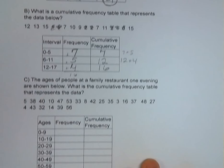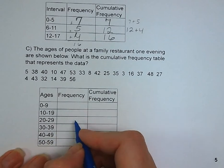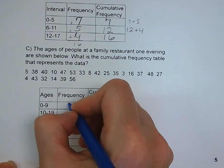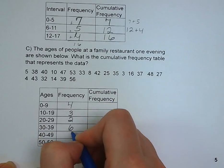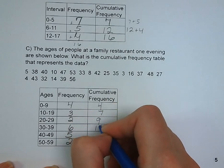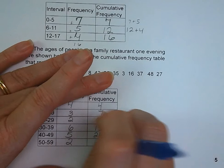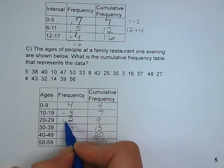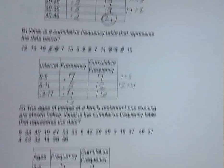Last example, the ages of people at a family restaurant on a given evening are shown below. What is a cumulative frequency table that represents it? Why don't you stop the video here and try it on your own? Welcome back from your pause. We've got our frequencies, 4, 3, 2, 6, 5, 2. And we need to just add those up. We've got 4. 4 plus 3 is 7. 7 plus 2 is 9. 9 plus 6 is 15. 15 plus 5 is 20. 20 plus 2 is 22.